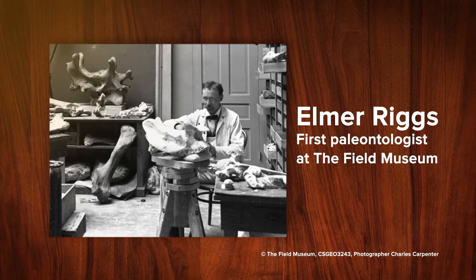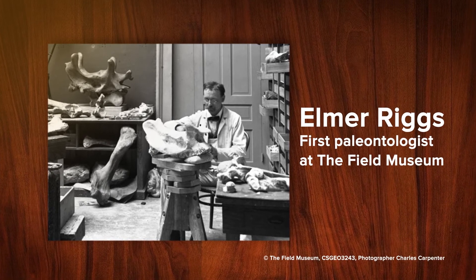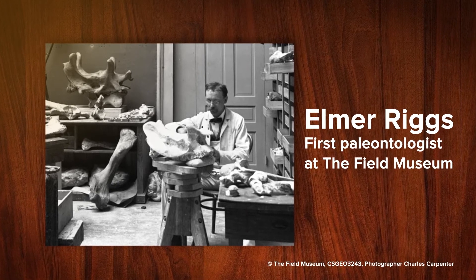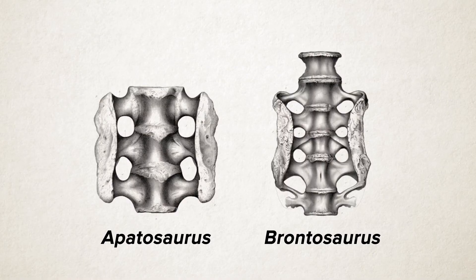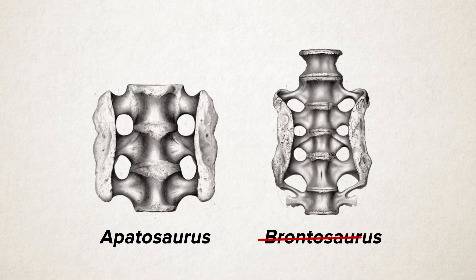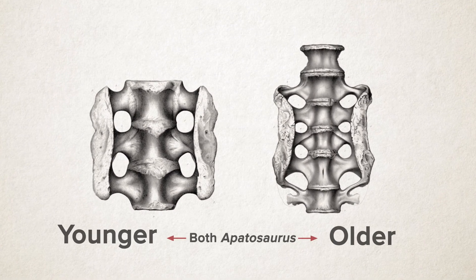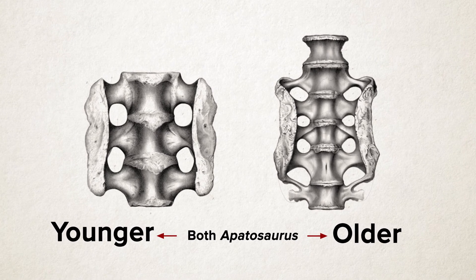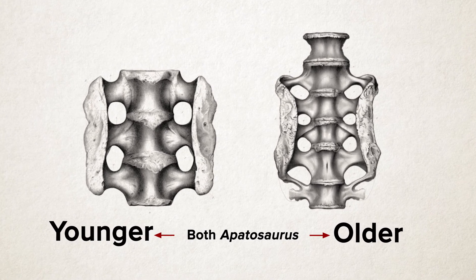In 1903, Riggs studied that and described those differences as part of a growth series. They are not valid to separate species — they describe different stages in the growth of one species. So Riggs synonymized Apatosaurus with Brontosaurus, and since 1903, Brontosaurus has been the junior synonym of Apatosaurus.